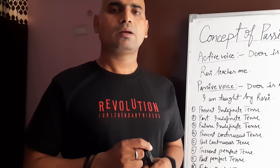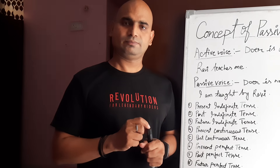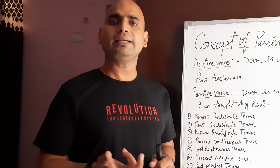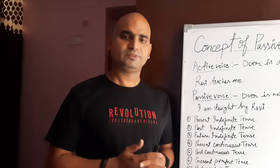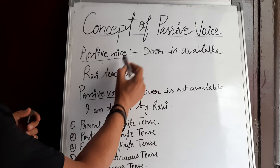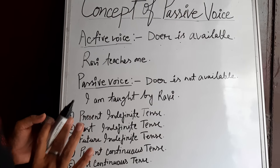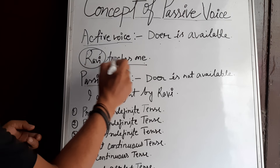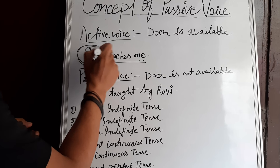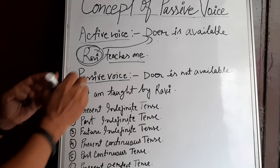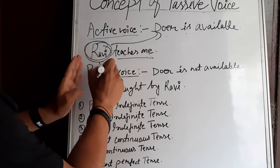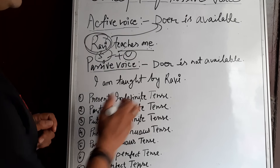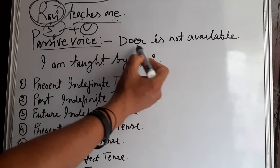Active voice means when the doer is available in the sentence — that will be active voice. Passive voice is when the doer is not available in the sentence. In active voice, the doer is available. For example, 'Ravi teaches me' — who teaches me? Ravi. So Ravi is the doer. There is a direct relationship between the subject and the work — that will be active voice. In passive voice, very simply, the doer is not available.